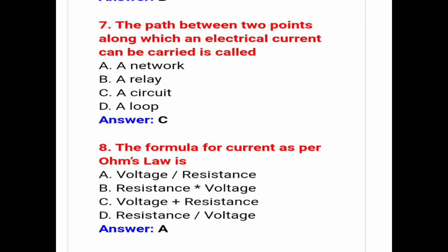Seventh: The path between two points along which an electrical current can be carried is called a circuit. Eighth: The formula for current as per Ohm's law is? Answer is option A — voltage per resistance.